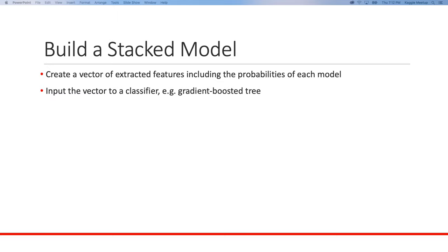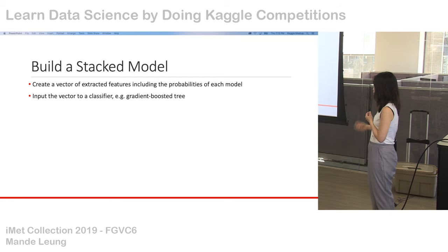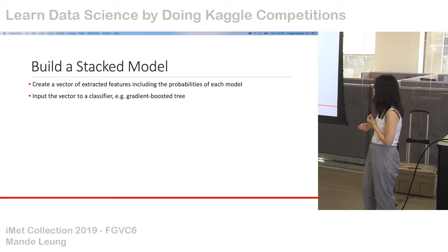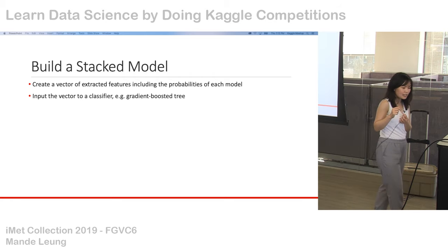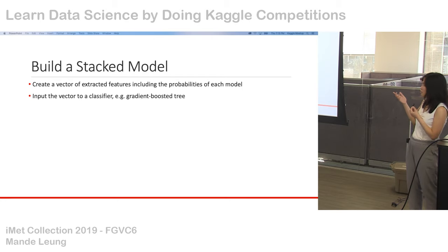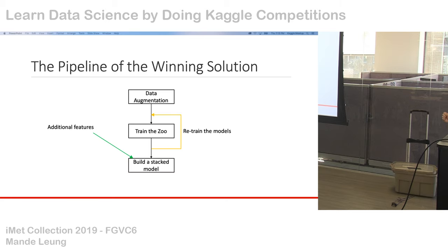At the final stage, we build a stacked model. After training all those pre-trained models — each outputting label probabilities for each image — you take all those probabilities and put them into an input vector, potentially adding other features too. You pass this vector to a classifier, typically a gradient boosted tree. LightGBM has become very popular for this step.